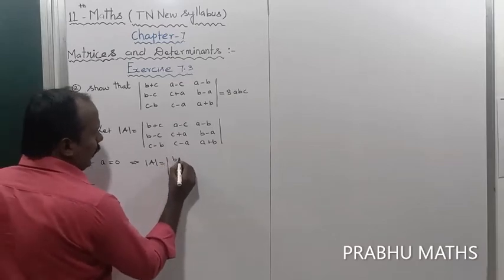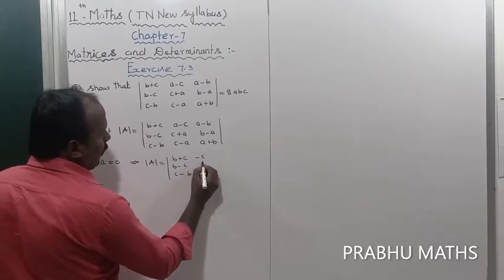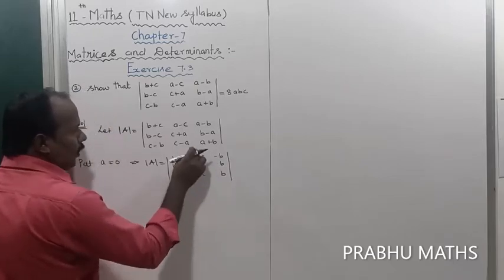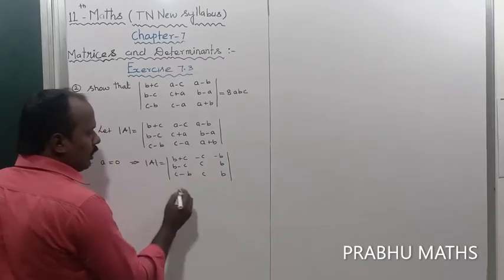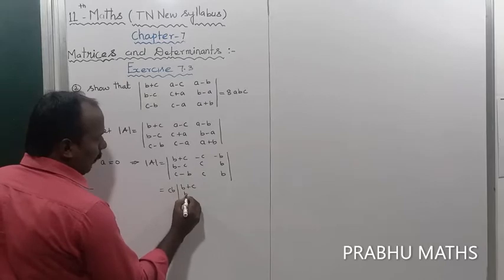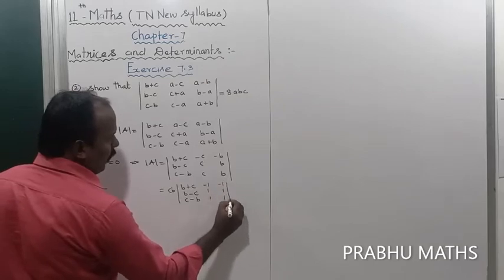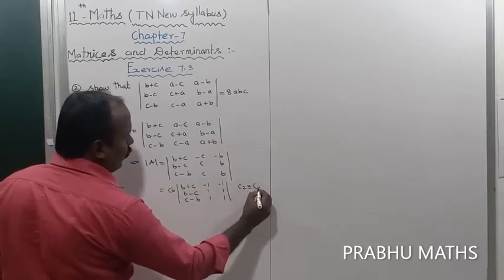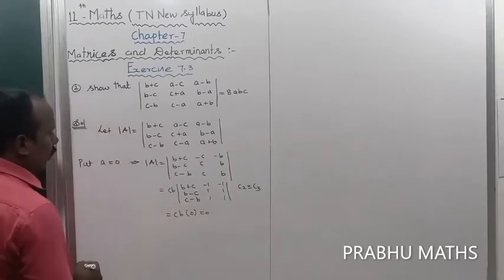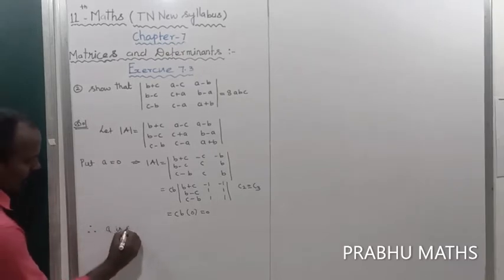When a equals 0, the determinant becomes: b plus c, b minus c, c; minus b, minus c, c; minus b, b, b. Taking c as a common factor from one column and b as a common factor, columns become identical, so the determinant equals 0. Therefore a is a factor of Δ(a).